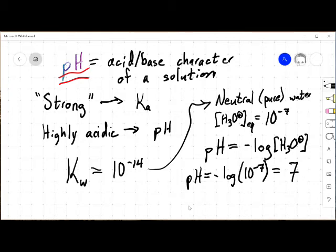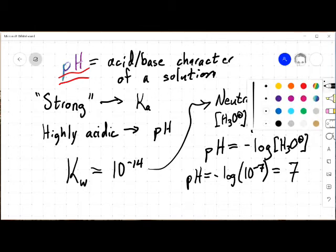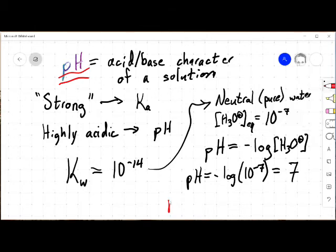If pH is less than 7, we describe that as an acidic solution.